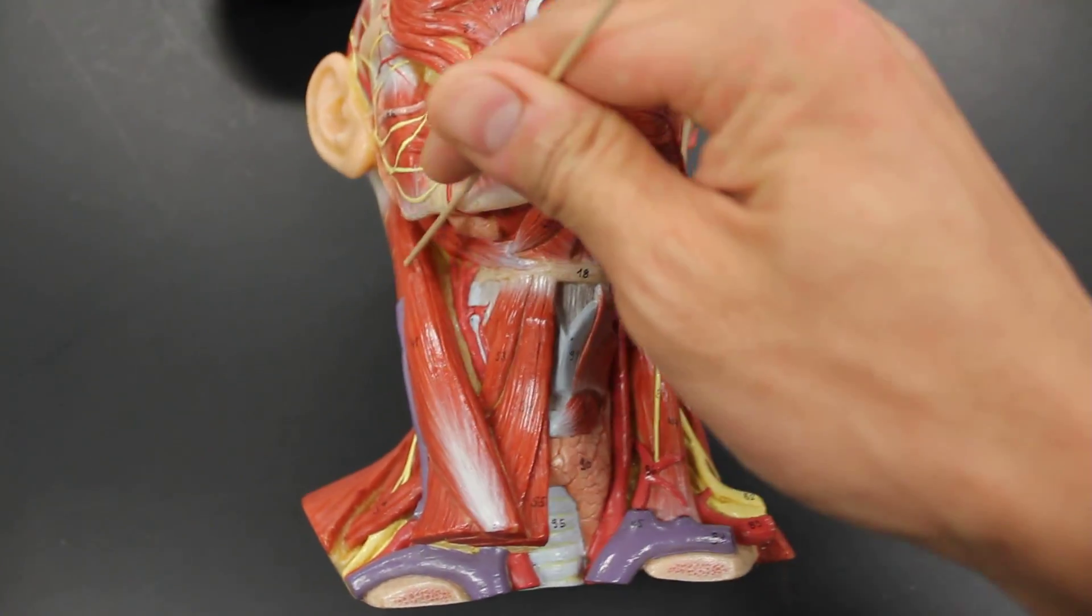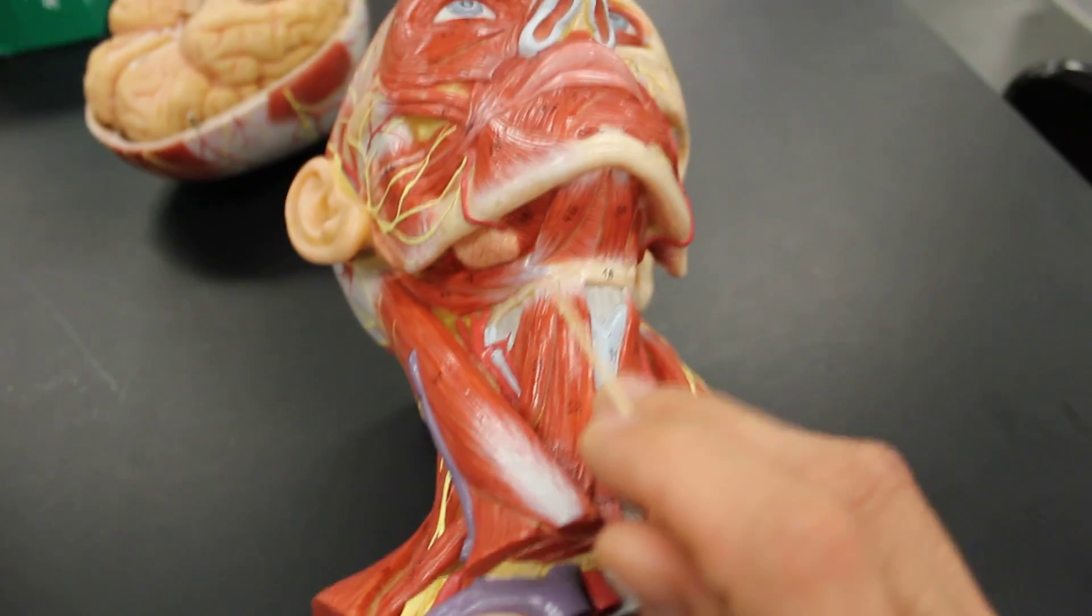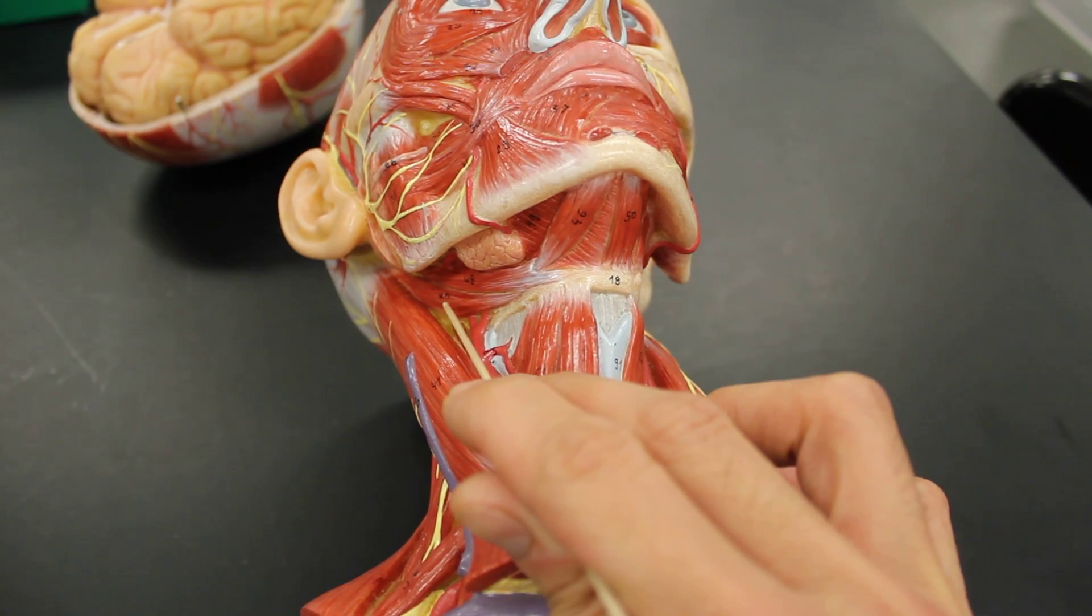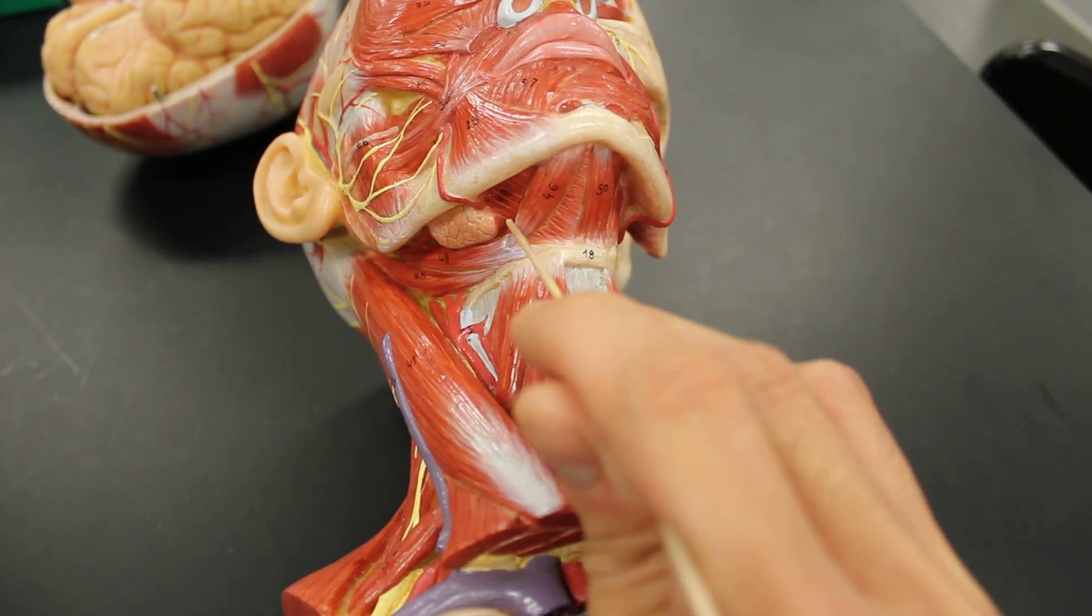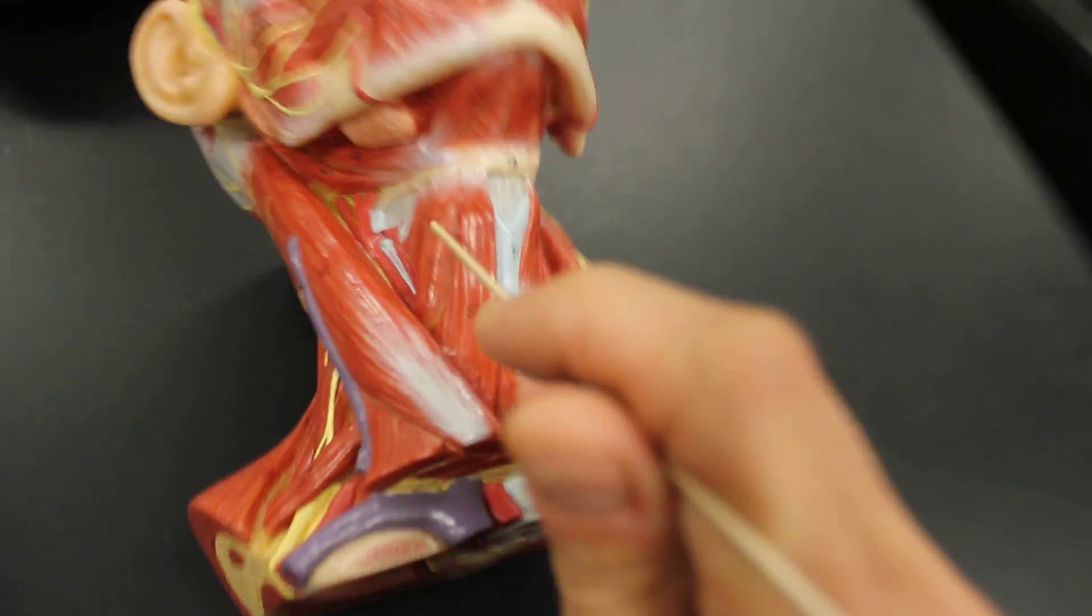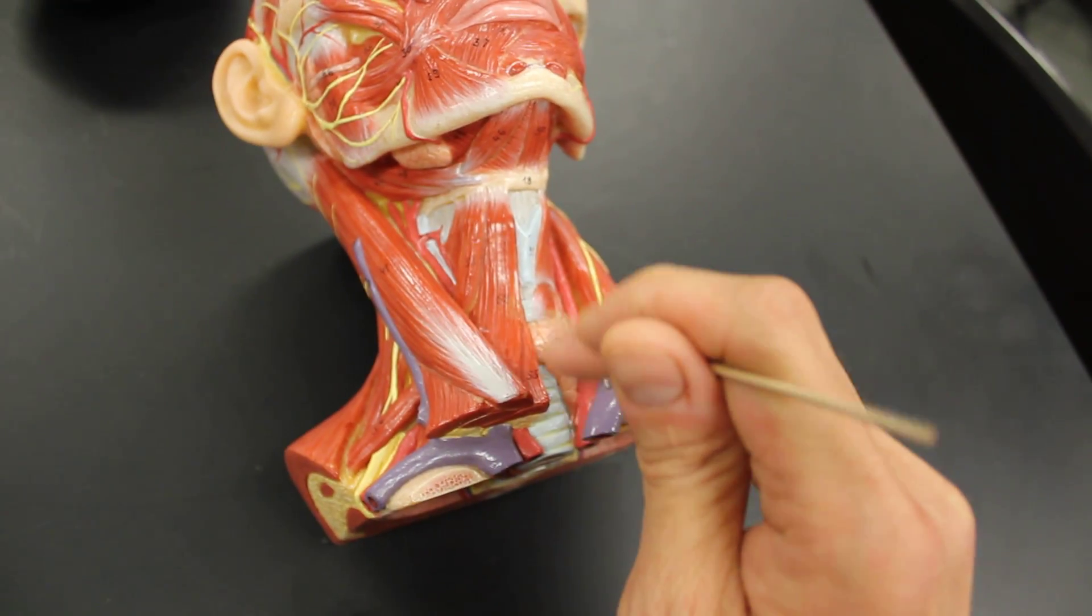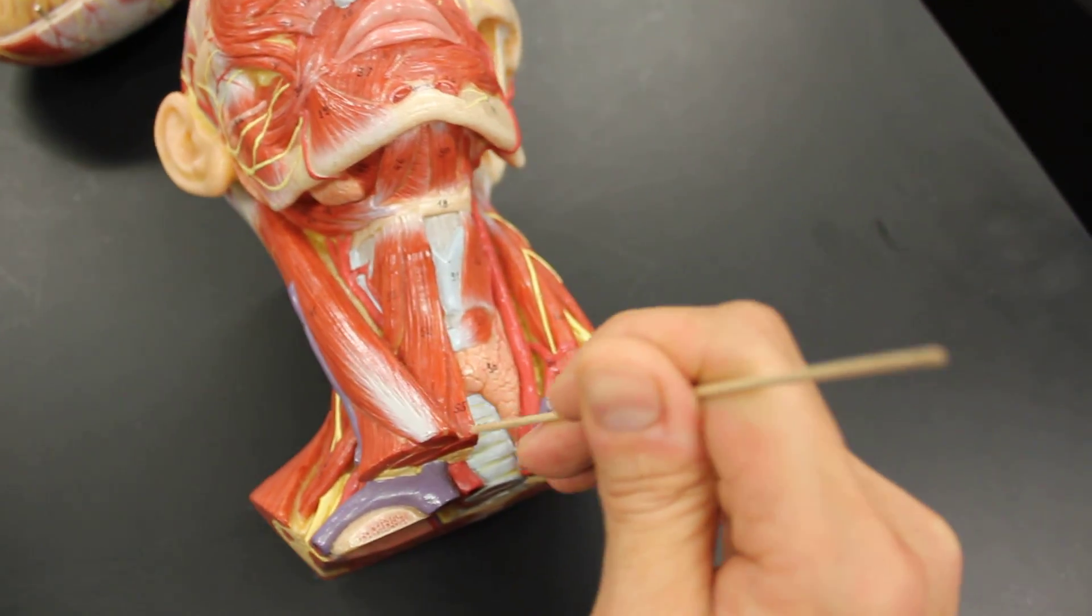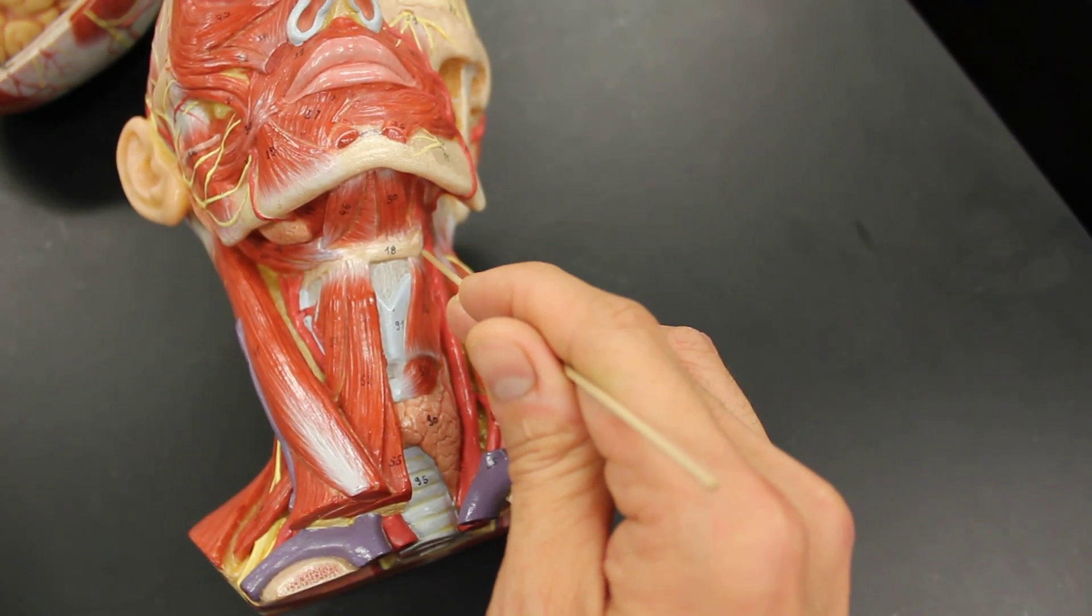Alright, let's review all of the muscles that we had described. Sternocleidomastoid, digastric from here and here, stylohyoid, mylohyoid, geniohyoid, omohyoid, sternohyoid, sternothyroid, and then thyrohyoid.